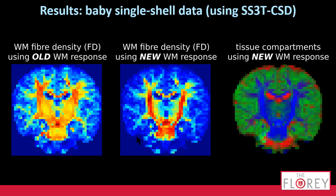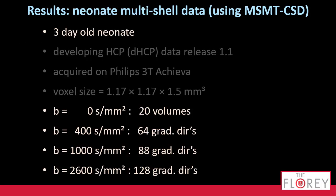This has quite an impact. If your root mean square error decreases that much, some things are bound to change. So the white matter fiber density — apparent fiber density — using the old response, the contrast looks like this. I used the jet color map just to enhance it a little bit, so be careful in interpreting that. But the new one shows quite a different contrast. The new one also separates the tissue types really well.